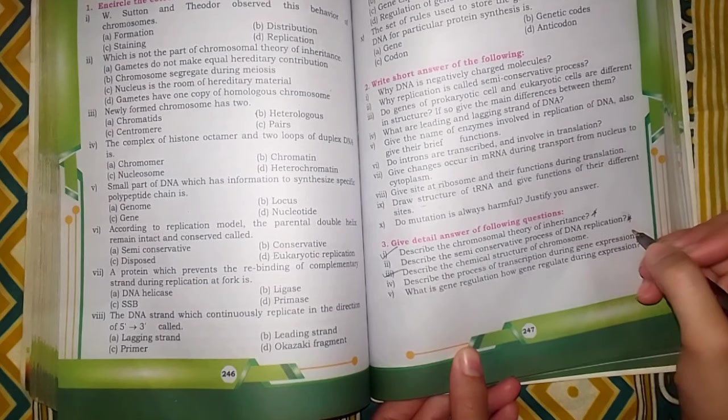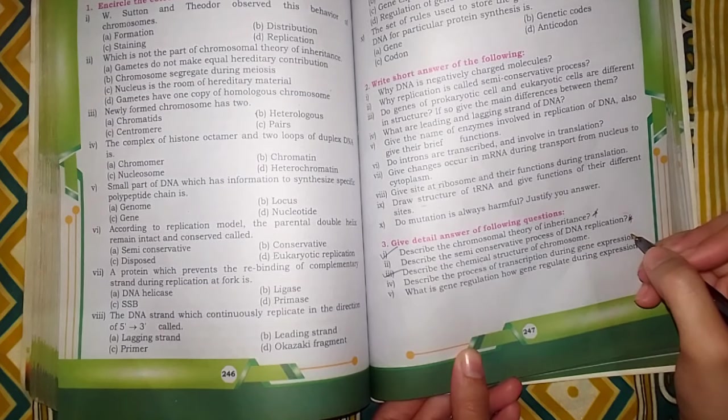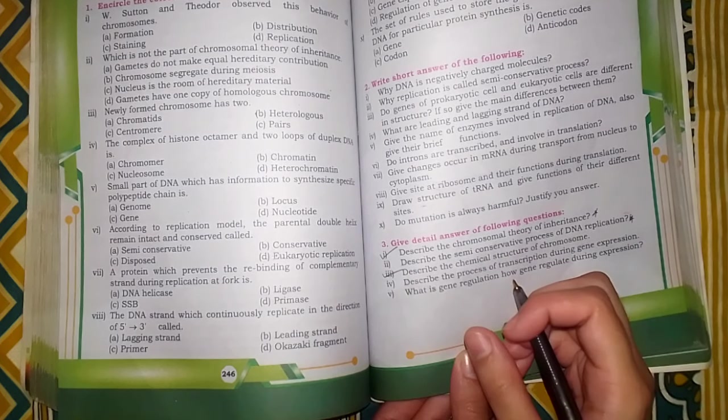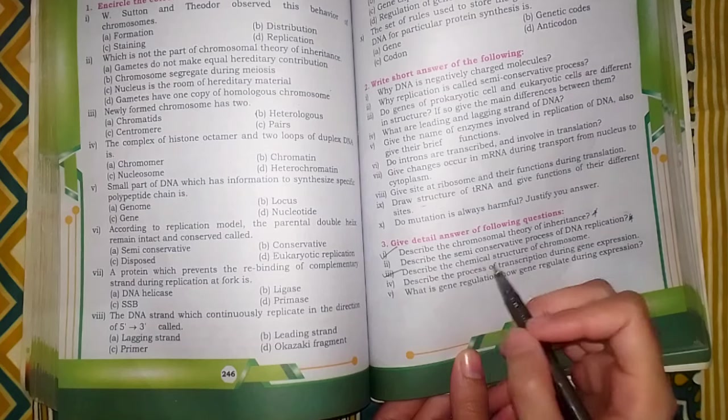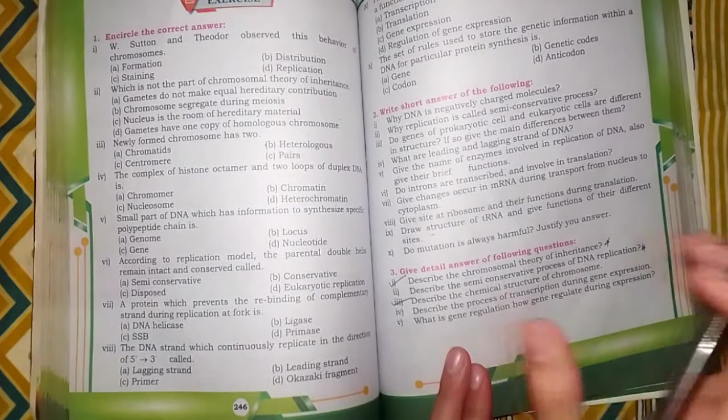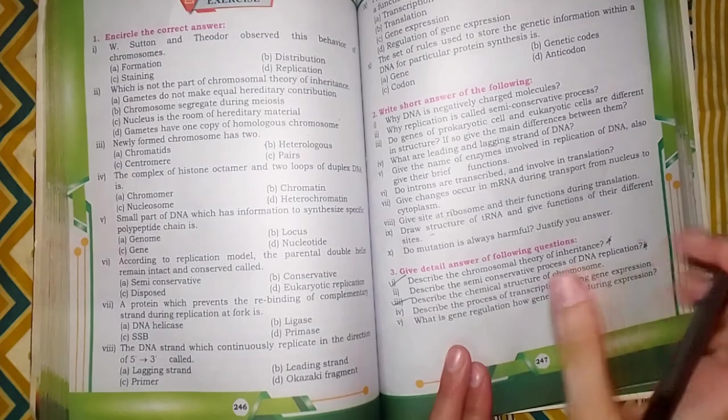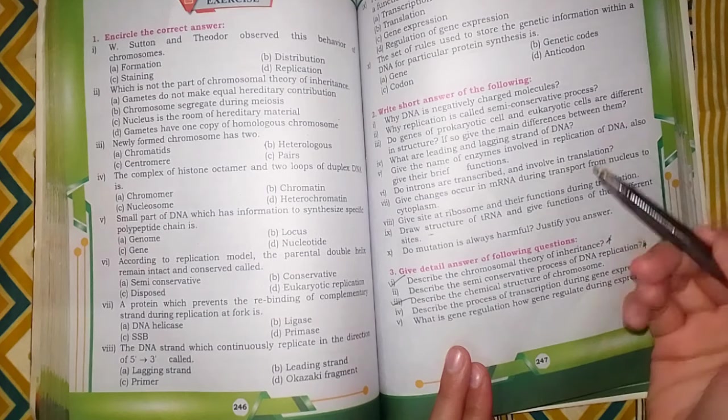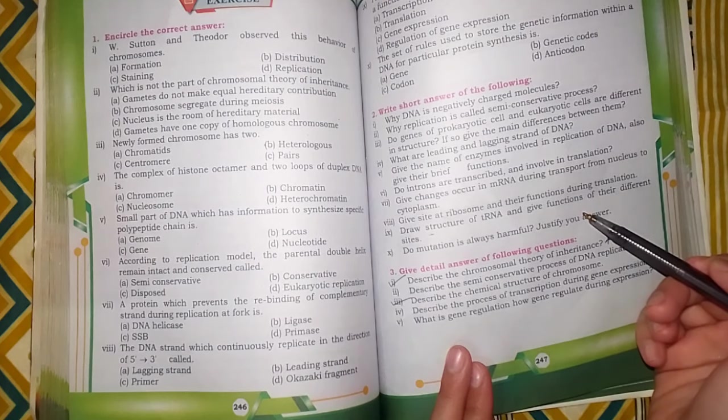You have to do question number 2. Then process of transcription and gene regulation, you can just see short answers. I have to give you a suggestion that short questions you have to do in any way. You have to do all the short questions from exercise.